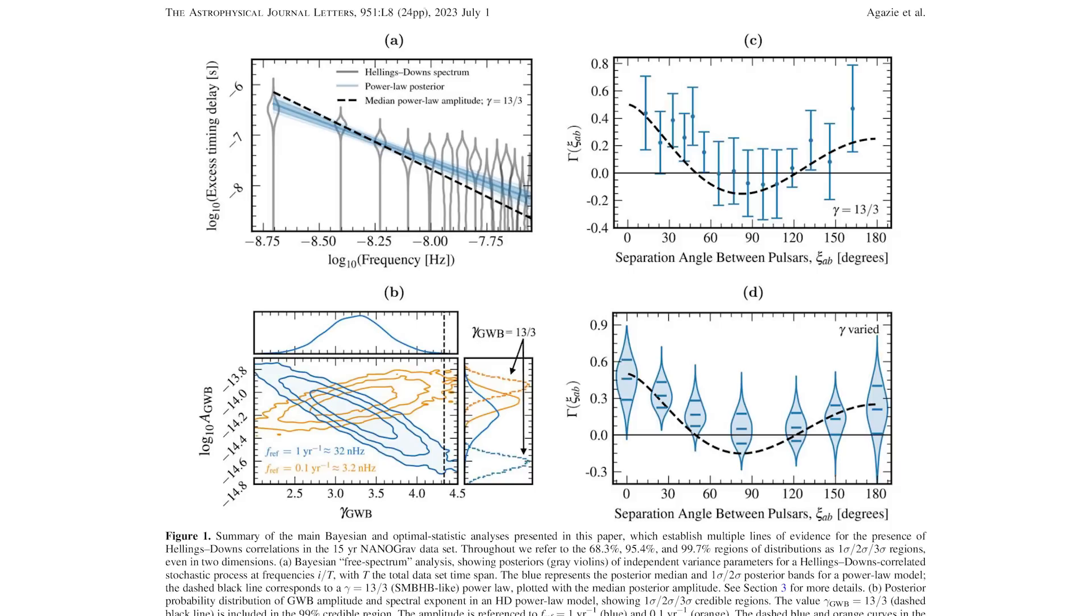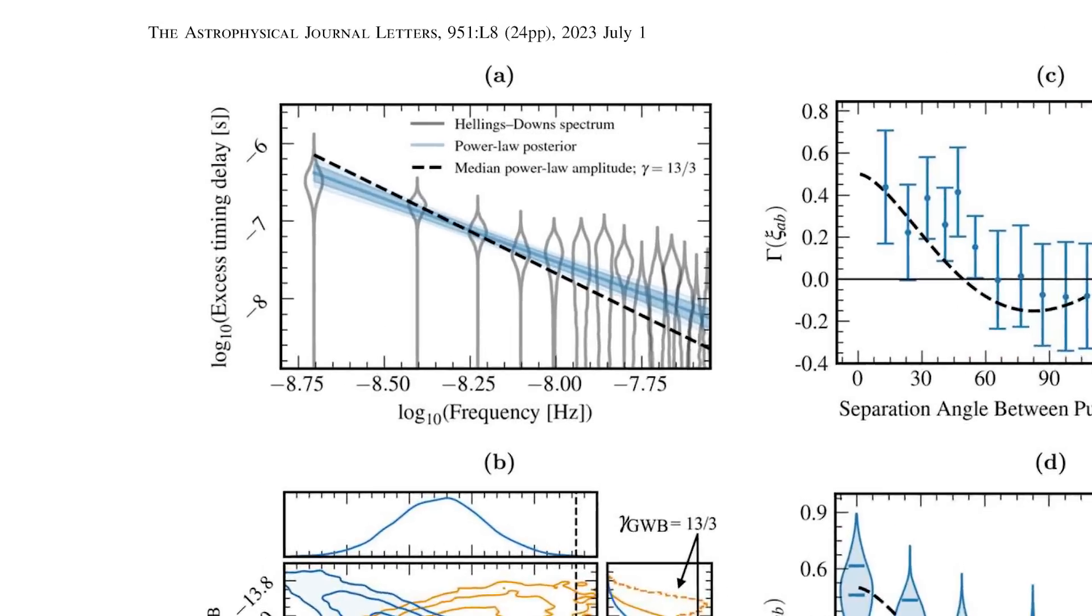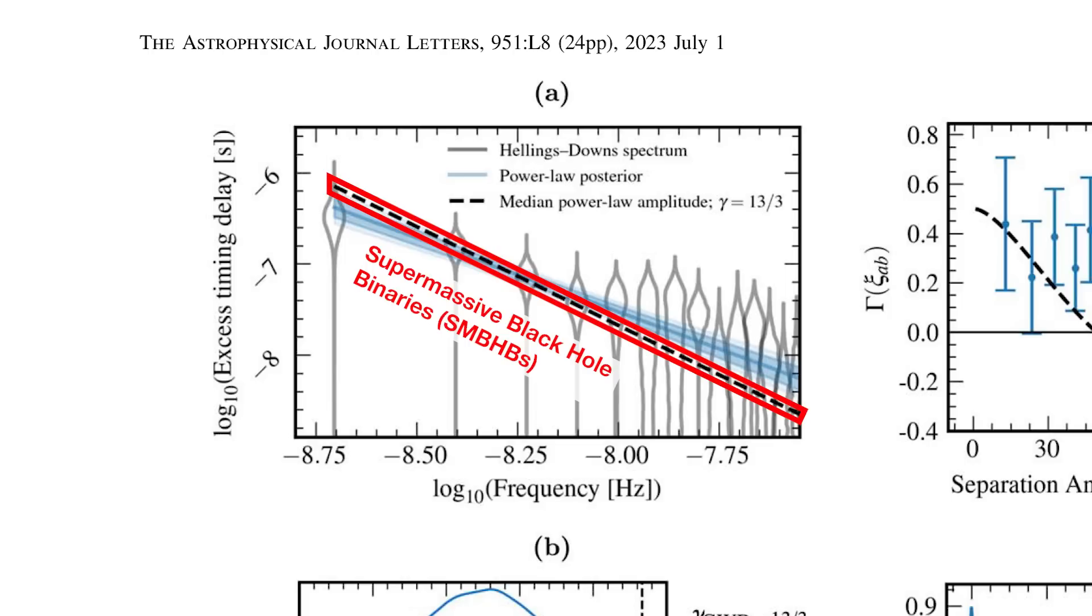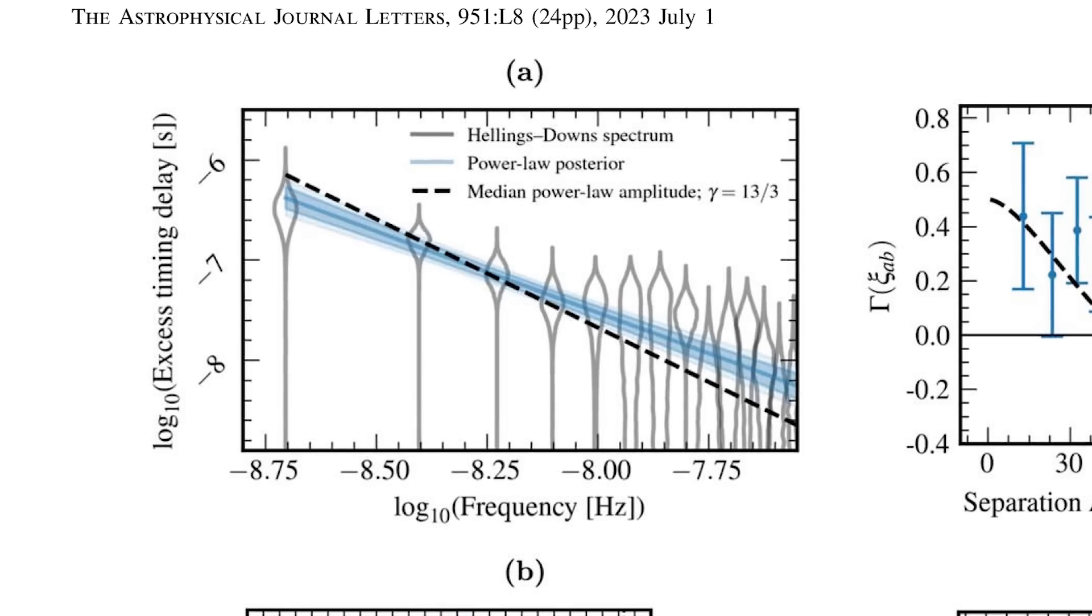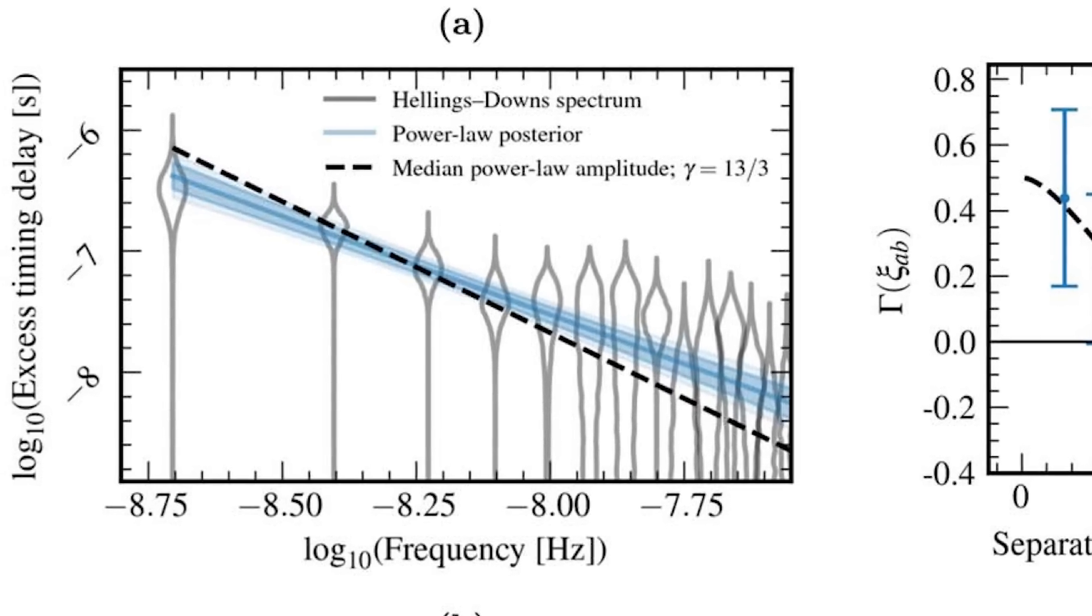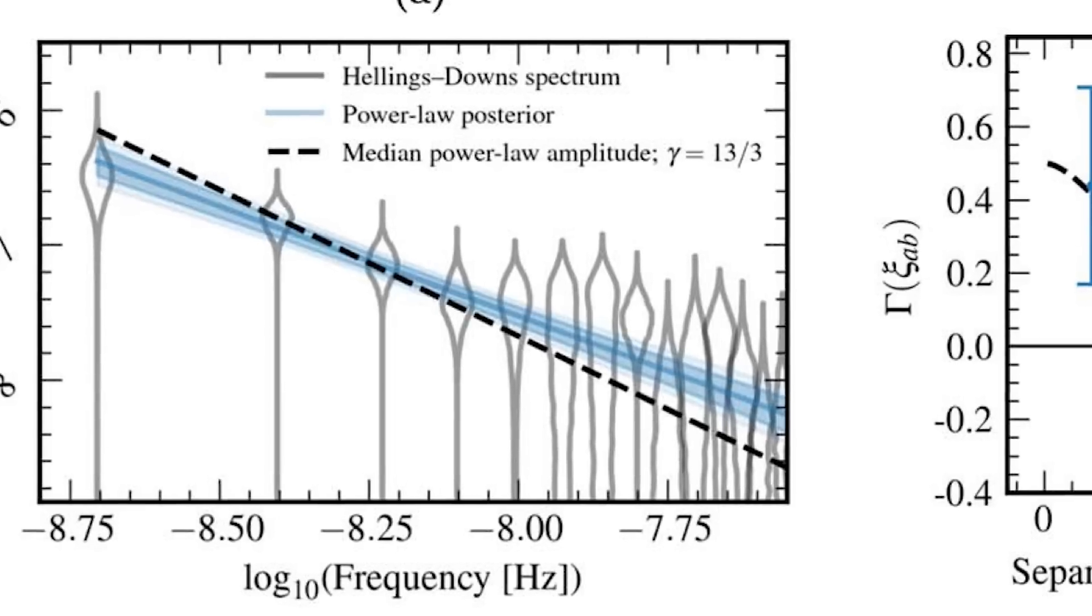But there is something else going on in the nanograv results that points to something very interesting. Let's go back to this power spectrum. This black dashed line is the pattern of timing correlations you would expect if the background waves were all being caused by supermassive black hole binaries. If that were the case, then the measured correlations in the blue line should match up with this dashed line. They don't. In fact, the higher the frequencies of the gravitational waves, the more the measurements seem to be pulling away from supermassive black holes. So what's going on here?